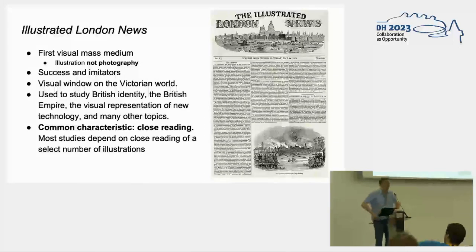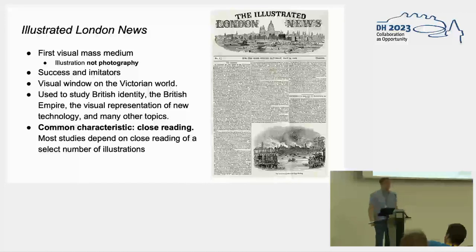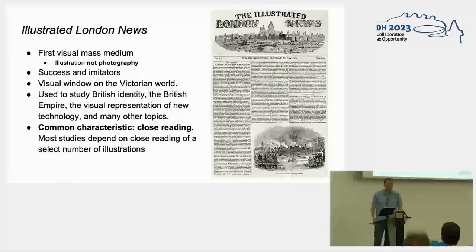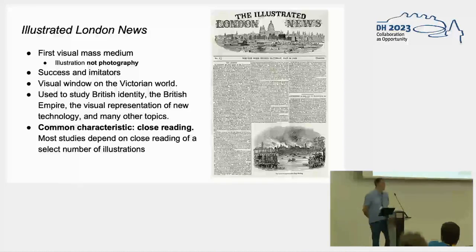So first something about the Illustrated London News. It was published on the 14th of May 1842 and is often considered by many to be the first visual mass medium. It's not photography but illustration that provided people with mass access to visual news for the first time in history. It quickly became a huge success selling millions of copies every week, and there were many imitators of this famous English publication in the US, Europe, and all over the place.